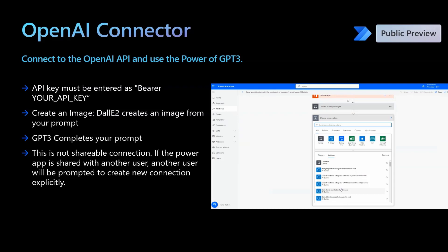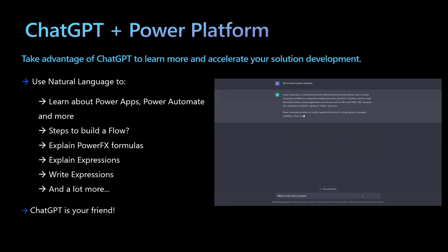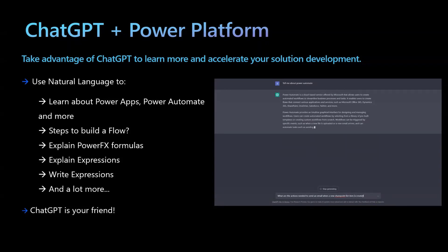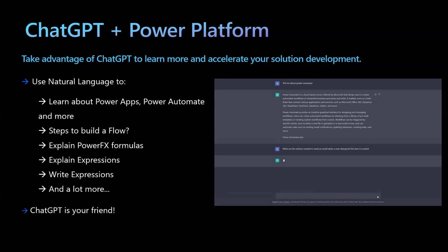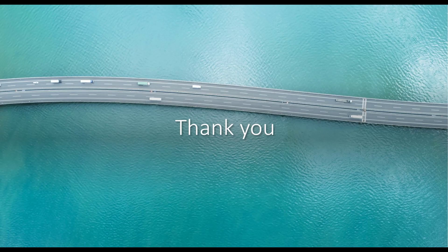Note that this bypasses Azure OpenAI and directly connects to OpenAI APIs, so customers don't have the same level of security compliance provided by Azure OpenAI. Finally, developers can use natural language and take advantage of ChatGPT to learn about Power Platform components, steps for creating flows or apps, understanding existing formulas, or ask ChatGPT to write a formula or an expression. ChatGPT can be a developer's best friend in learning and accelerating solution development cycles. With that, we've come to the end of this presentation. Thank you and hope you find it helpful.